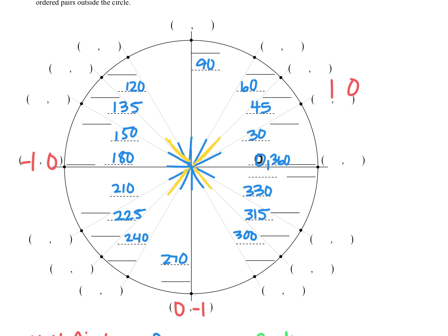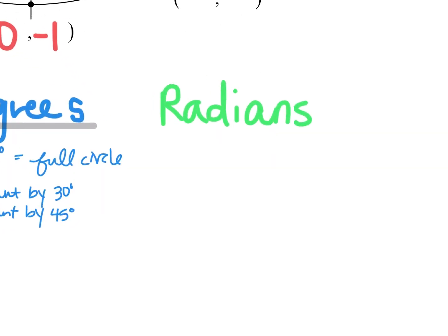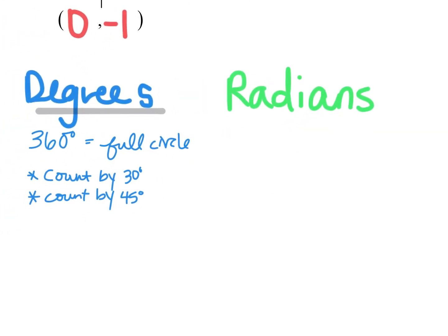All right that's it for degrees. We are now going to go back and do the radians. Okay so if I look at radians and the definition of a radian comes from the circumference of a unit circle and I can explain that more in class. What you need to know right now is that a full circle is two pi radians.